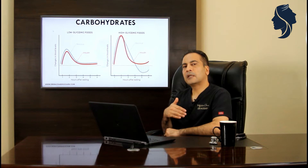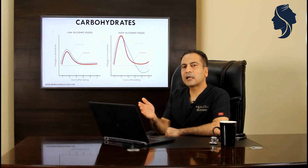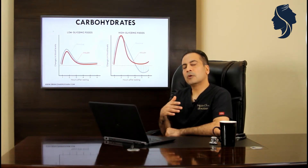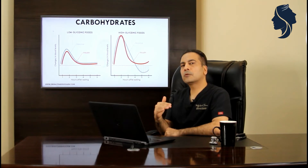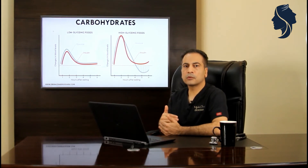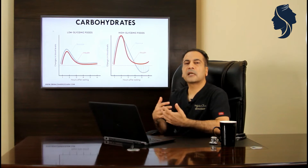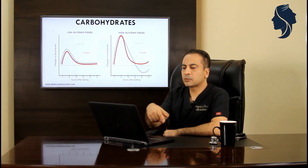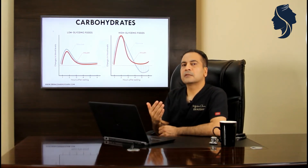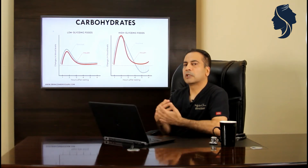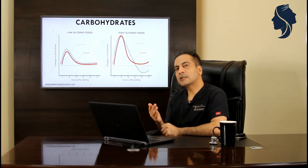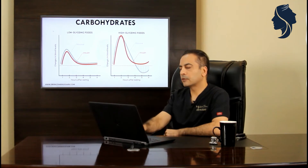What happens then is you have an overshoot of insulin. As you can see on the right side with high glycemic food, there's an overreaction from the body because it doesn't know how to deal with it, and it ends up with blood glucose going so low that you start to have cravings. Low glycemic food is less likely to give you cravings; high glycemic food is more likely to give you cravings.